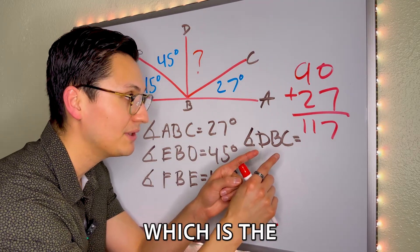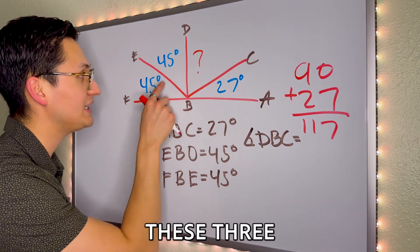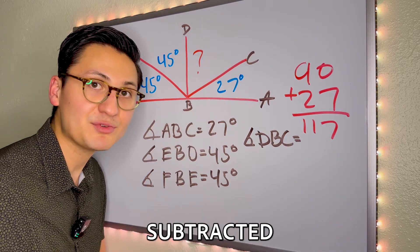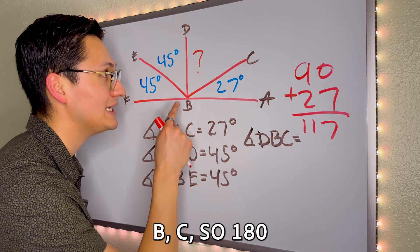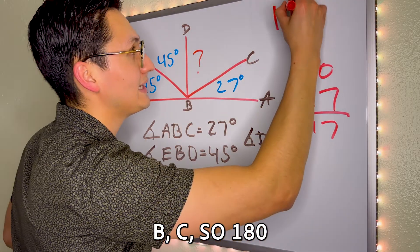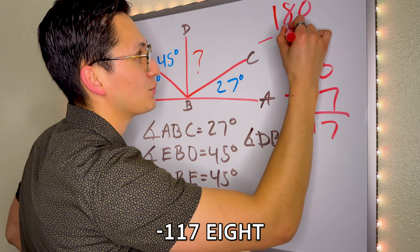We'll get us 117. Now that number, which is the total degrees of these three angles, must be subtracted from 180 so that we can figure out D, B, C. So 180 minus 117.